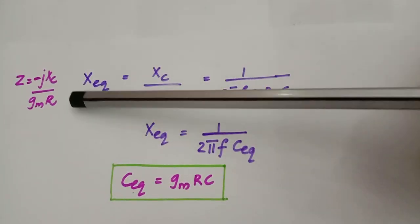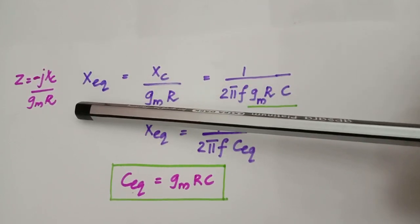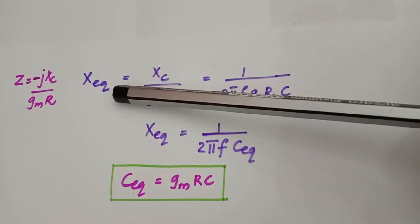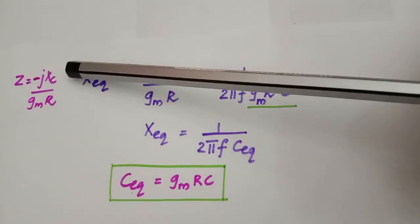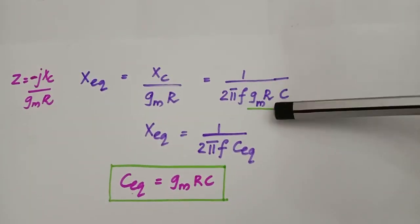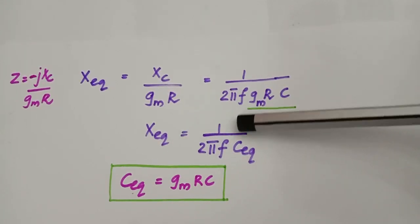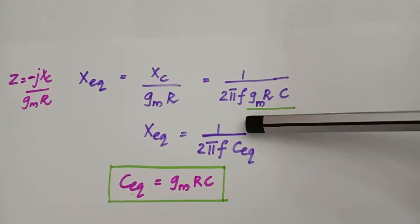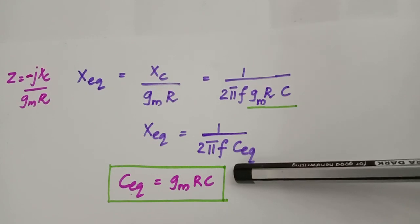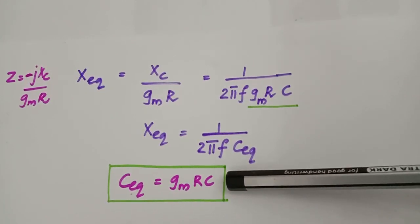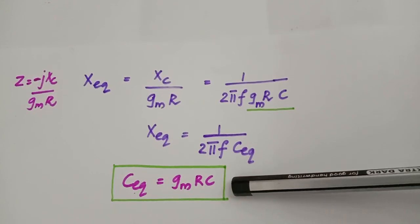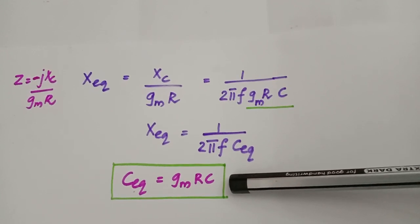The impedance seen at AA' is Z = −jXC / (GM × R), which is a pure reactance. The equivalent reactance X_eq = XC / (GM × R). Substituting XC = 1/(2πFC), we get X_eq = 1 / (2πF × C_eq), where C_eq = GM × R × C. So by placing resistors and capacitors as per the conditions, we obtain a pure capacitive reactance at the output, and the effective capacitance corresponding to that reactance is C_eq = GM × R × C.